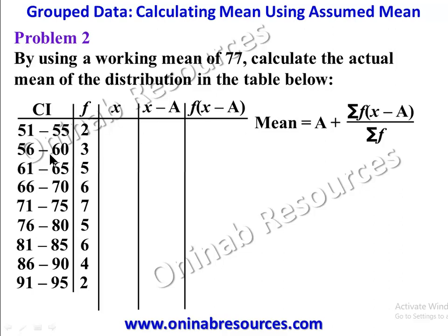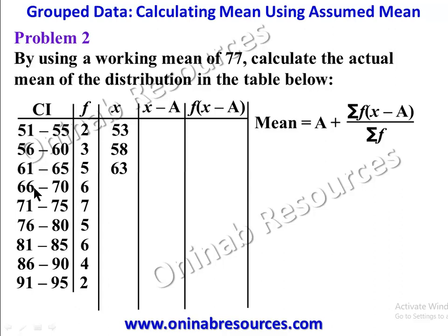Calculating the midpoints for Problem 2: 51 plus 55 divided by 2 gives 53; 56 plus 60 divided by 2 gives 58; 61 plus 65 divided by 2 gives 63; 66 plus 70 divided by 2 gives 68; 71 plus 75 divided by 2 gives 73; 76 plus 80 divided by 2 gives 78; 81 plus 85 divided by 2 gives 83; 86 plus 90 divided by 2 gives 88.